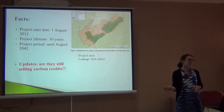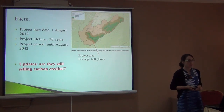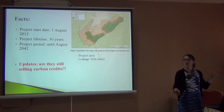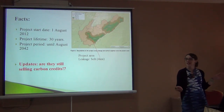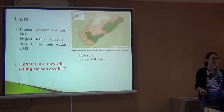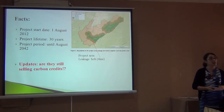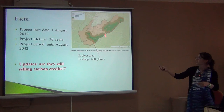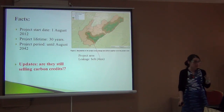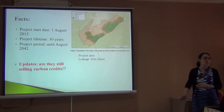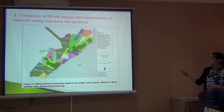Does anybody know what was the major threat to this forest? This is Sierra Leone — has anybody seen the film Blood Diamond? So what is the threat to this forest? Mining — mining for diamonds actually. This is the border with Liberia, and this is actually where the events the film depicts were meant to be happening.